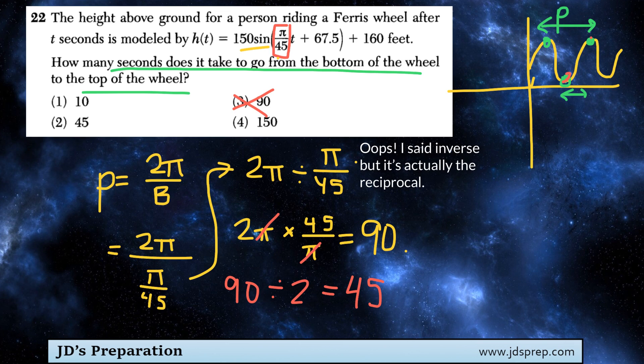It would be 45. So it takes 45 seconds to get from the bottom of the Ferris wheel to the top, and that matches option number 2.